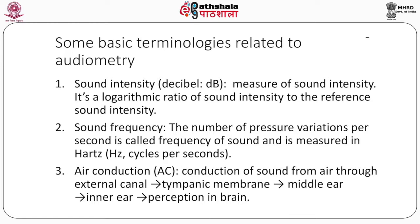Higher the frequency, the more high-pitched the sound perceived. Normal human hearing ranges from 20 hertz to 20 kilohertz. Next, air conduction (AC): conduction of sound from air through the external ear to the tympanic membrane, to the middle ear, to the inner ear, and ultimately perception in the brain. This is the usual path of sound to reach the inner ear for sound perception.